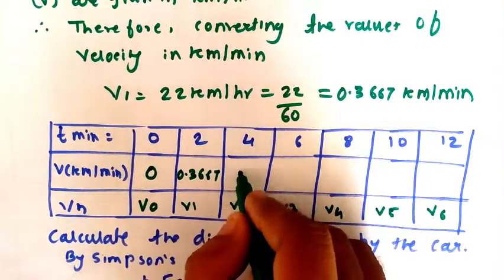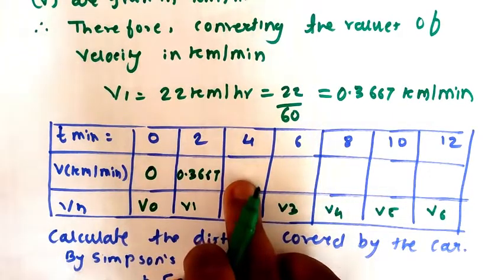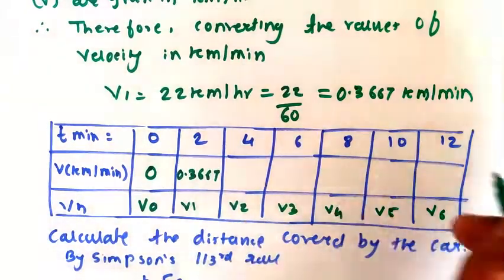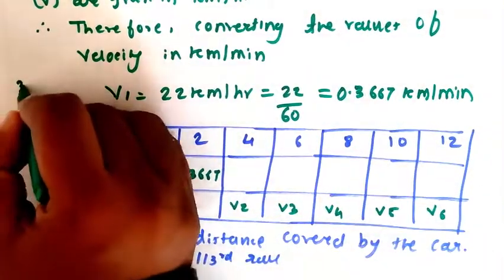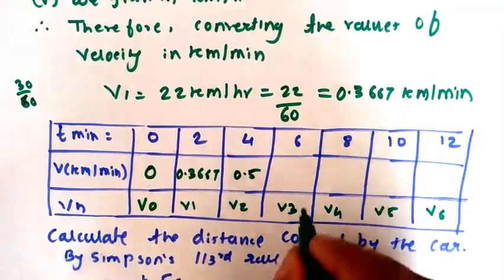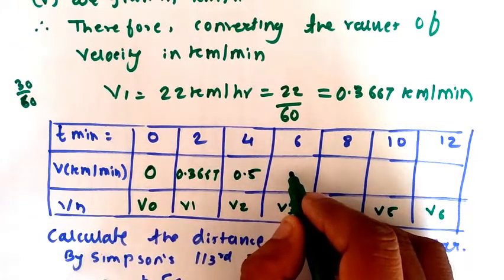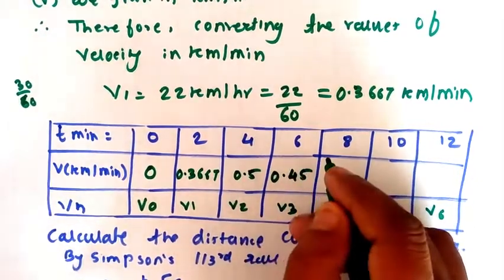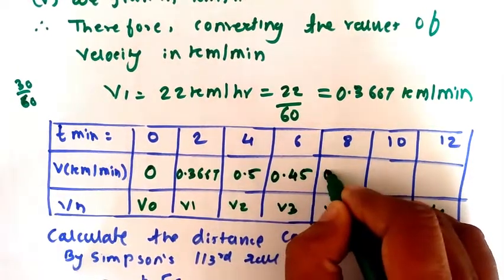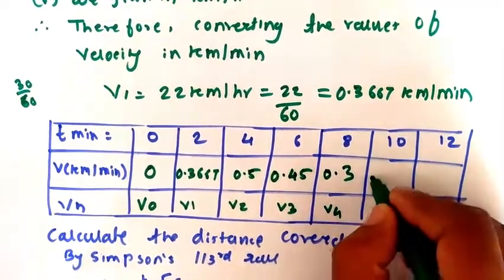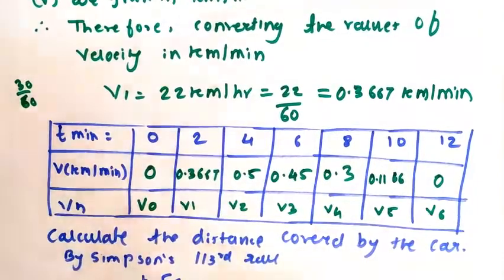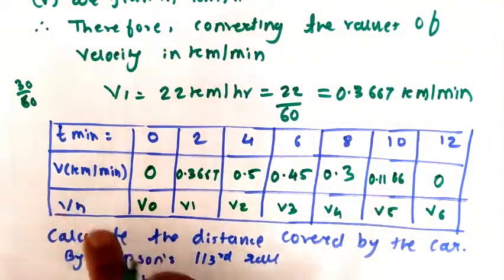Next, when time is 4, velocity was 30, so 30 divided by 60, it will be 0.5. Next, for time 6 minutes it was 27, so it will be 0.45. For time 8 minutes, it was 18 kilometers per hour, after converting it will be 18 divided by 60, 0.3. Similarly, 0.1166 for 10 minutes and 0 for 12 minutes. So we have found out the value of v in terms of kilometer per minute.